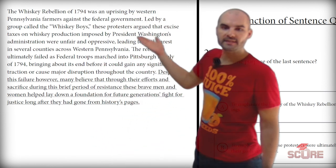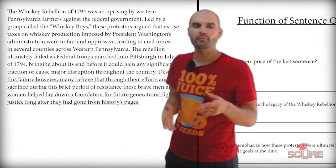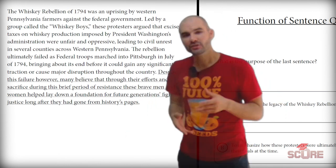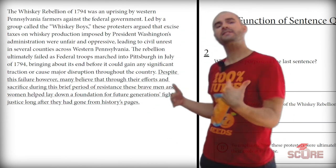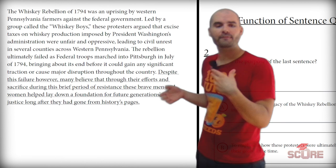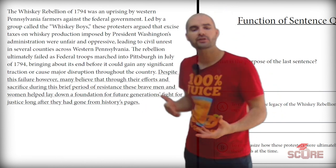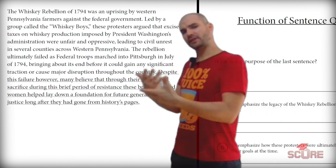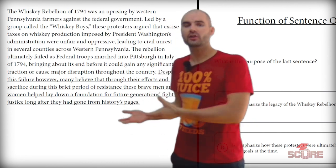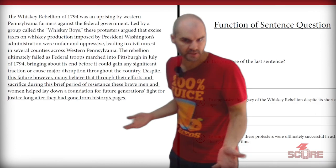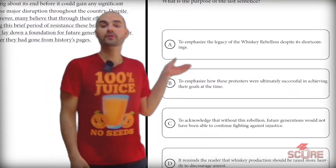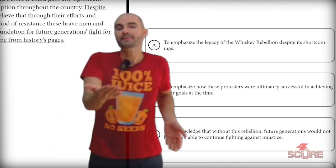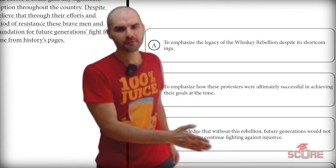Question number two. Again, I'm going to look at the first sentence: 'The Whiskey Rebellion of 1794 was an uprising by Western Pennsylvania farmers against the federal government.' They're asking about the purpose of the last sentence, which says: 'Despite this failure, many believe that through their efforts and sacrifice during this period of resistance, these brave men and women laid down a foundation for future generations' fight for justice.' I understand that the Whiskey Rebellion was a failure, but it left a legacy or an inspiration for others to rebel against the government for other injustices. The first answer option — to emphasize the legacy of the Whiskey Rebellion despite its shortcomings — seems like a really good answer. It's talking about the legacy and how it inspired other people. The answer is A.